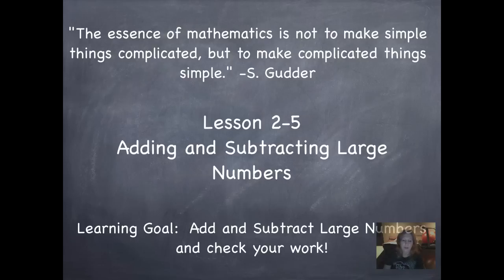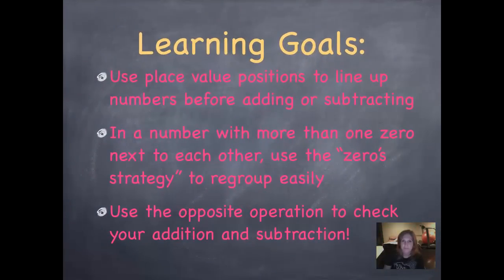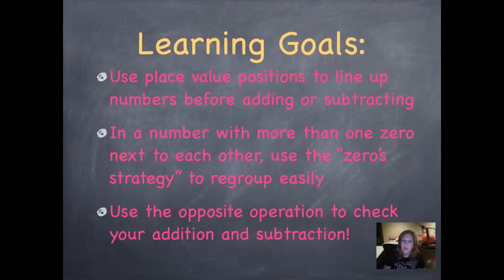Your learning goal is to add and subtract large numbers and to check your work. The independent lesson learning goals are: use place value positions to line up numbers before we add or subtract; use the zero strategy to regroup easily when a number has more than one zero next to each other; and use the opposite operation to check our addition and subtraction. In fifth grade, we expect you to always check your work so you can fix it before you turn it in.